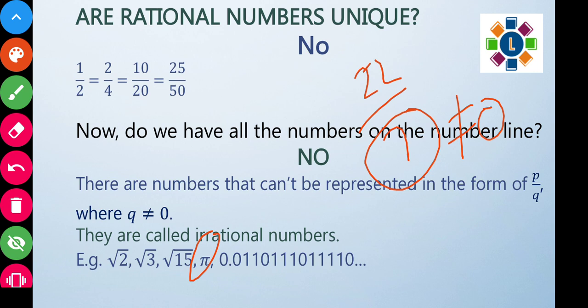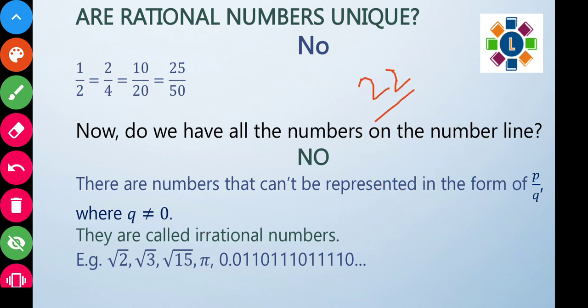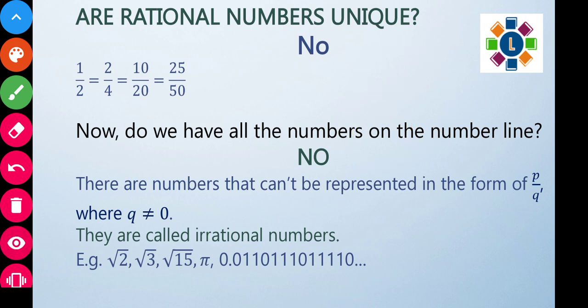The value 22 by 7 is only an approximate value of pi, not the exact value. The exact value of pi has been computed by supercomputers to billions of digits — the digits go on and on without repeating.